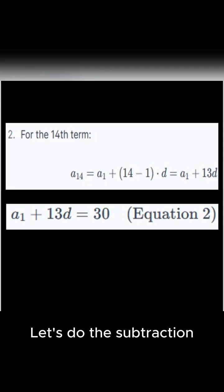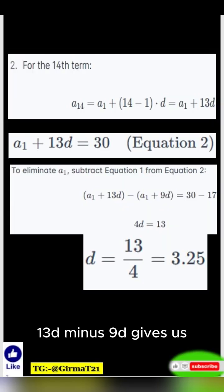Let's do the subtraction. (a_1 + 13d) - (a_1 + 9d) = 30 - 17. On the left side, the a_1's cancel out. 13d - 9d gives us 4d.